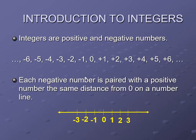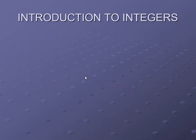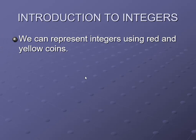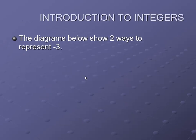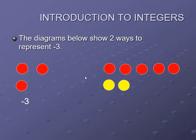Now let us do an activity. We can represent integers using red and yellow coins. Red coins represent negative integers and yellow coins represent positive integers. The diagram below shows two ways to represent minus 3 — this one is minus 3, and this one is also minus 3.